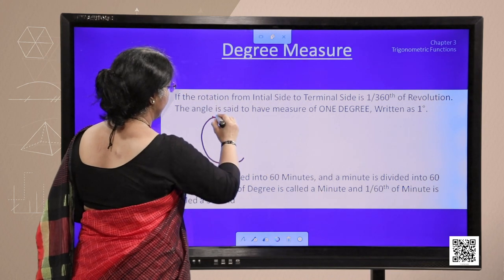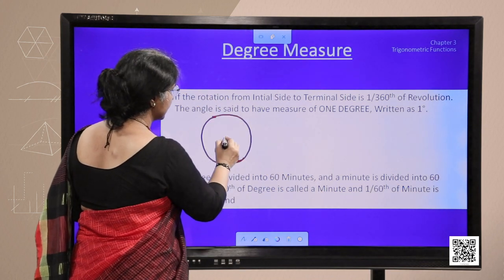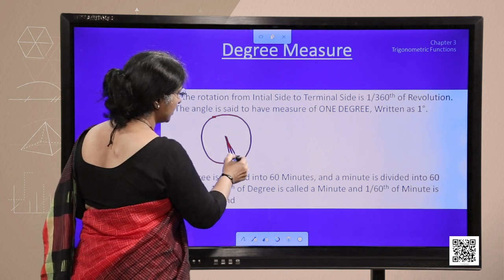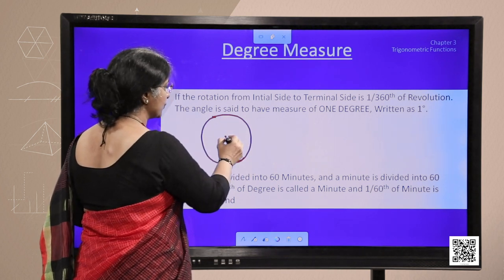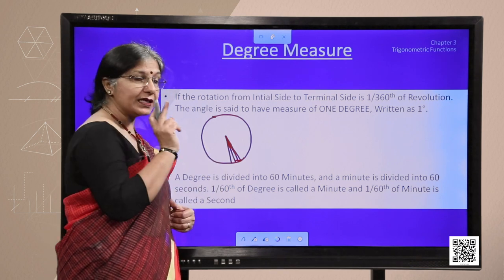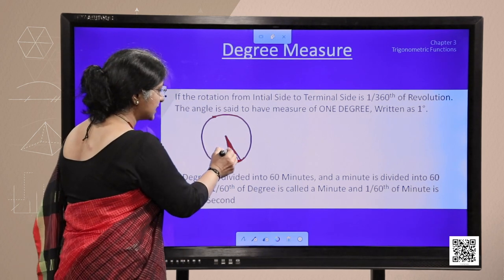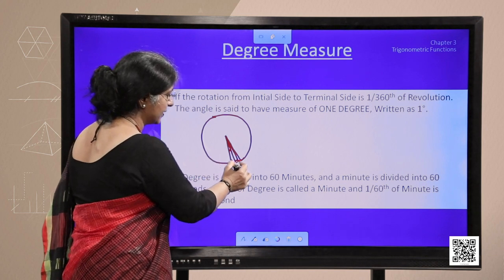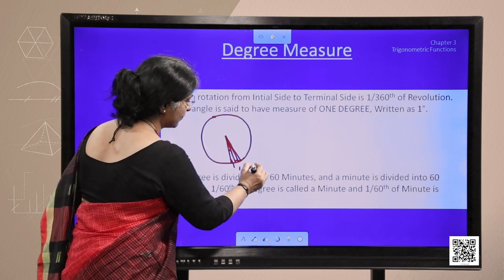Let me explain with the help of a diagram. If we take this circle and divide this circle into small parts, total revolution is divided into 360 parts and each part, each small part is called 1 degree. This is 1 degree.